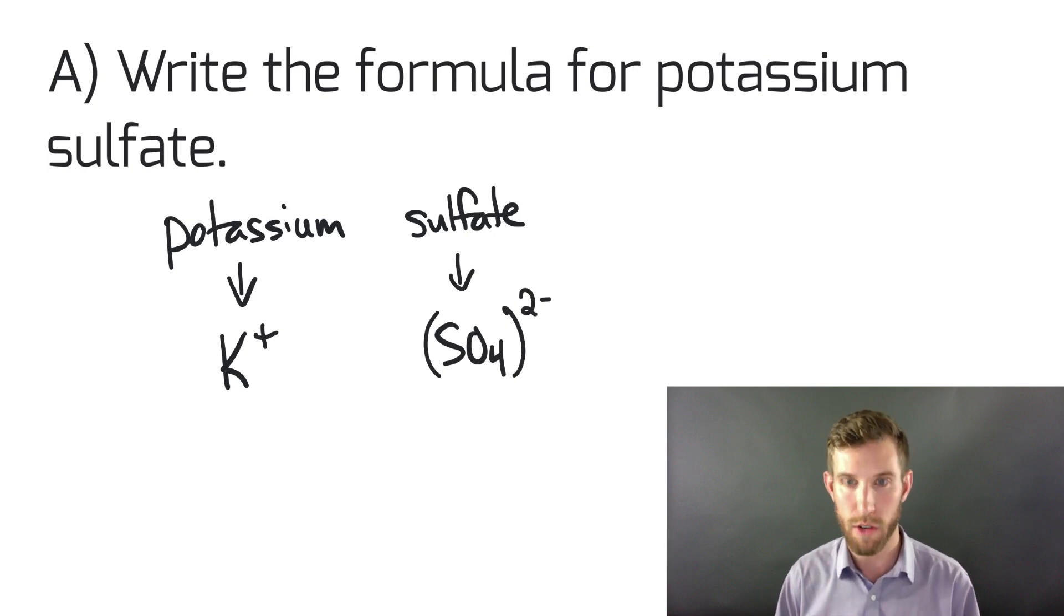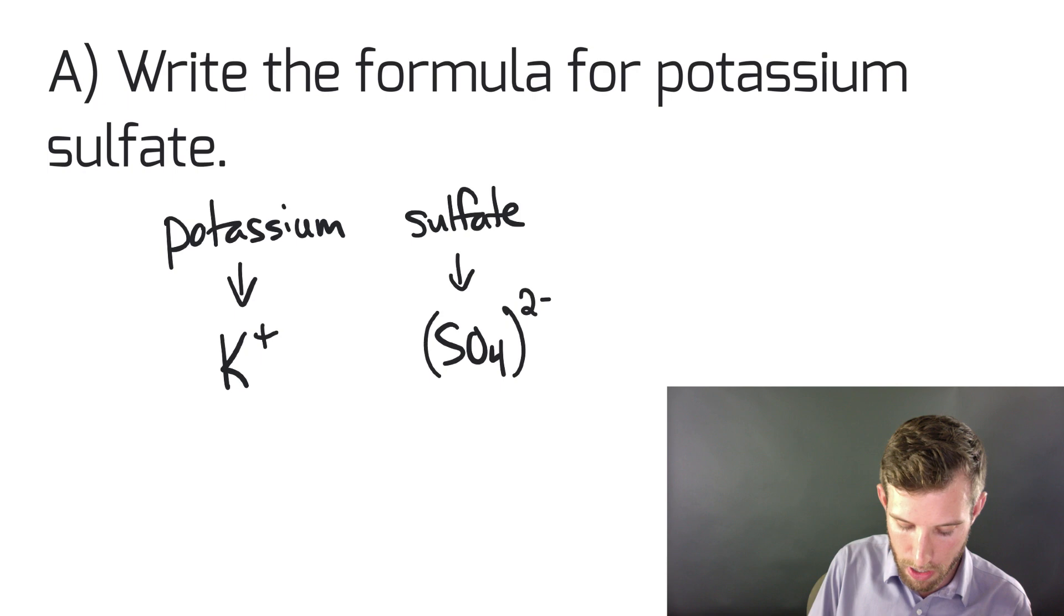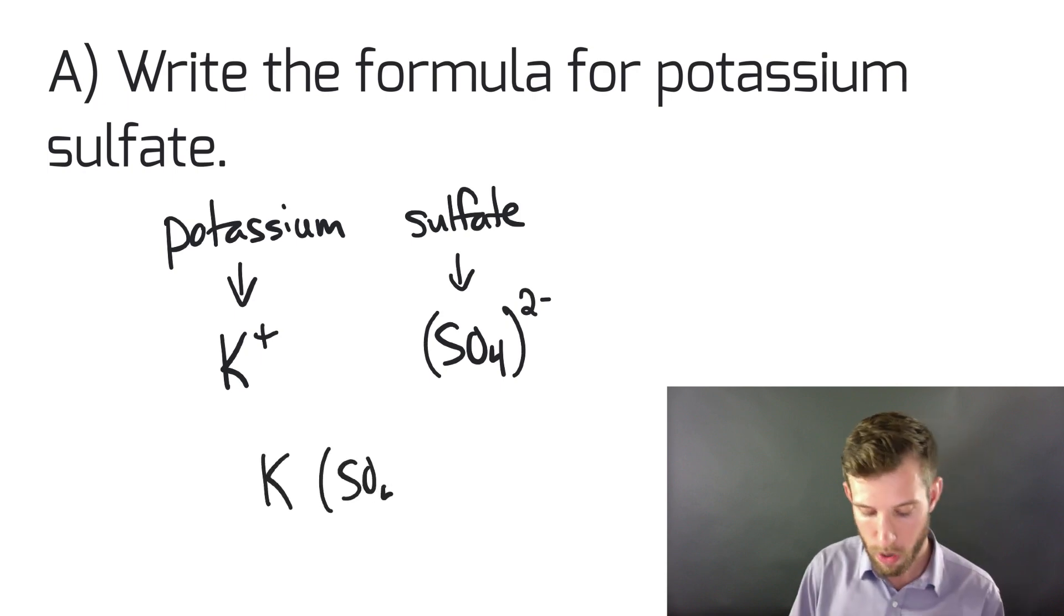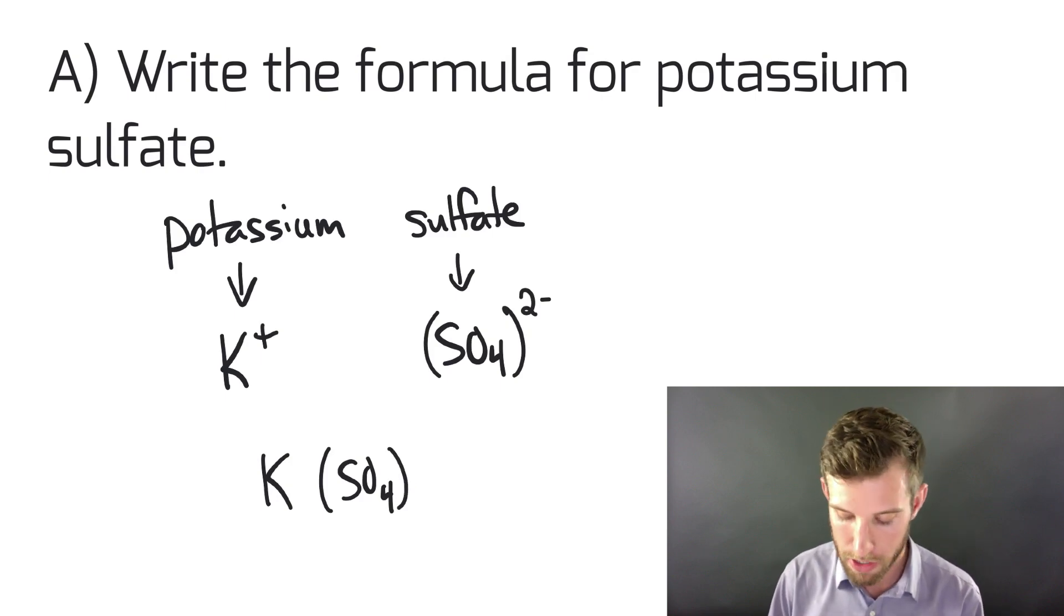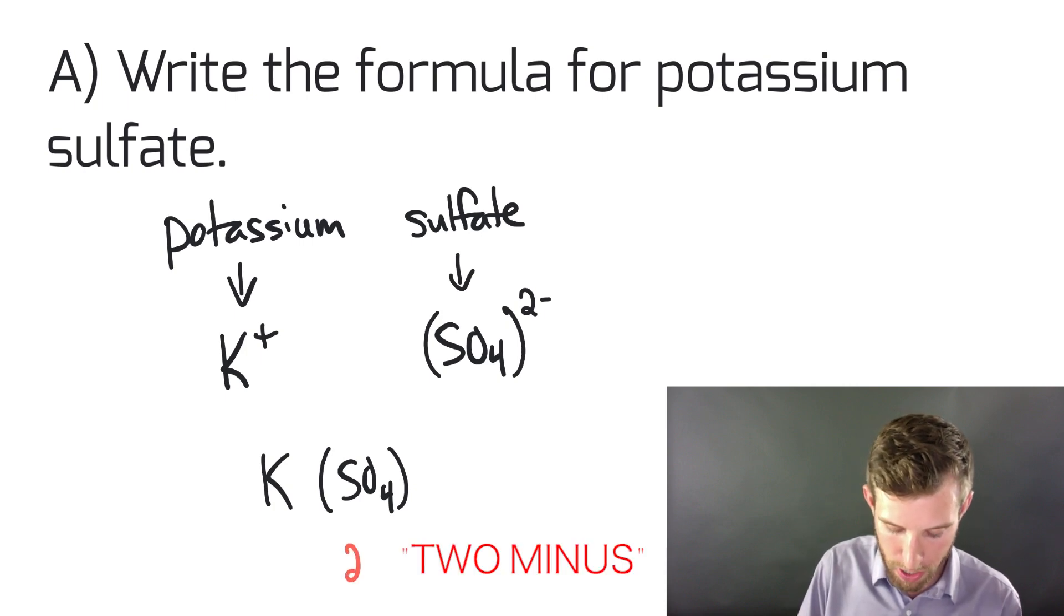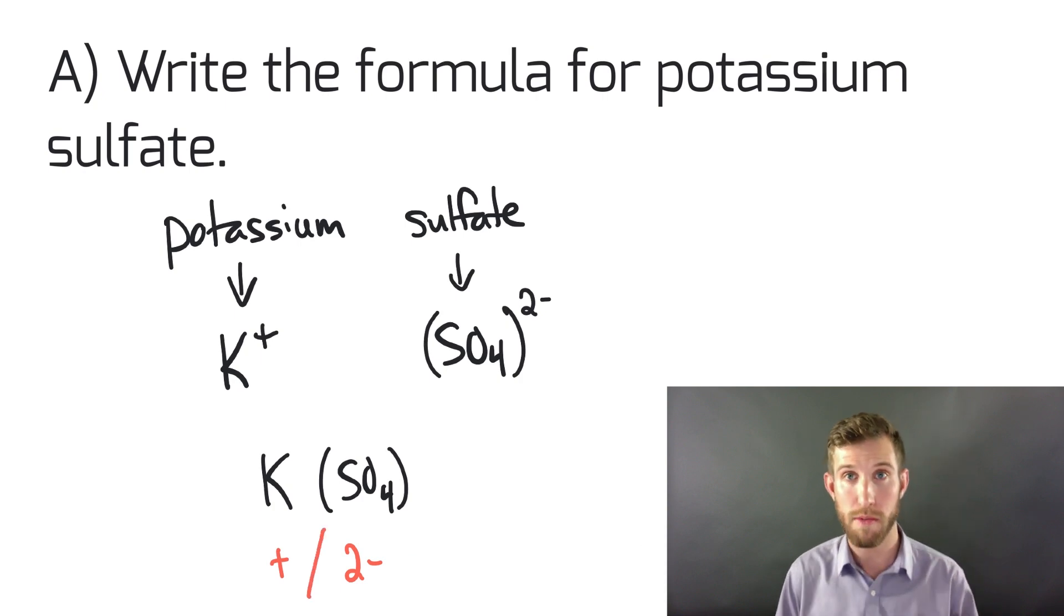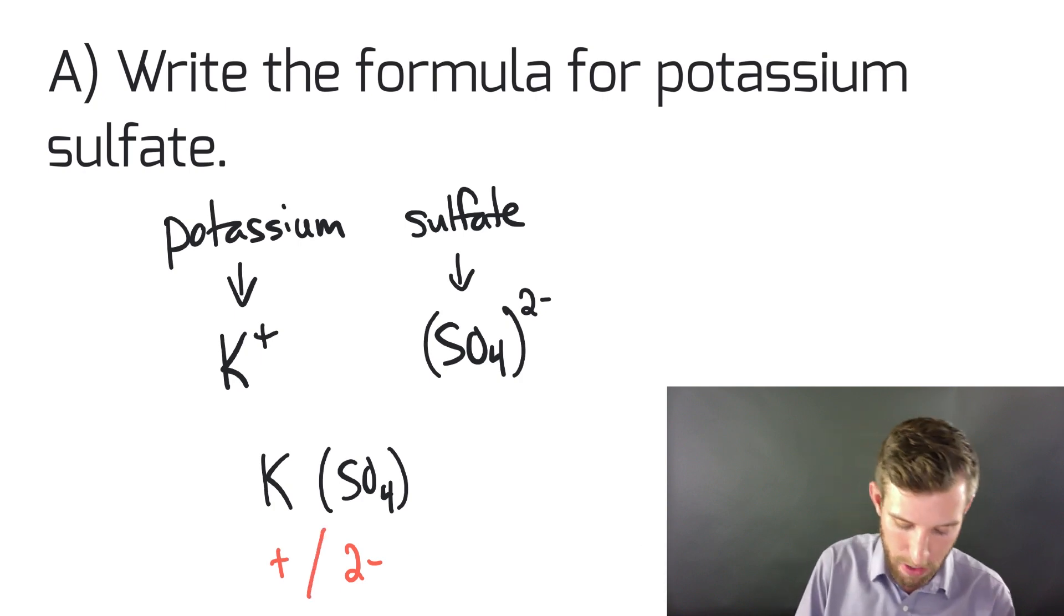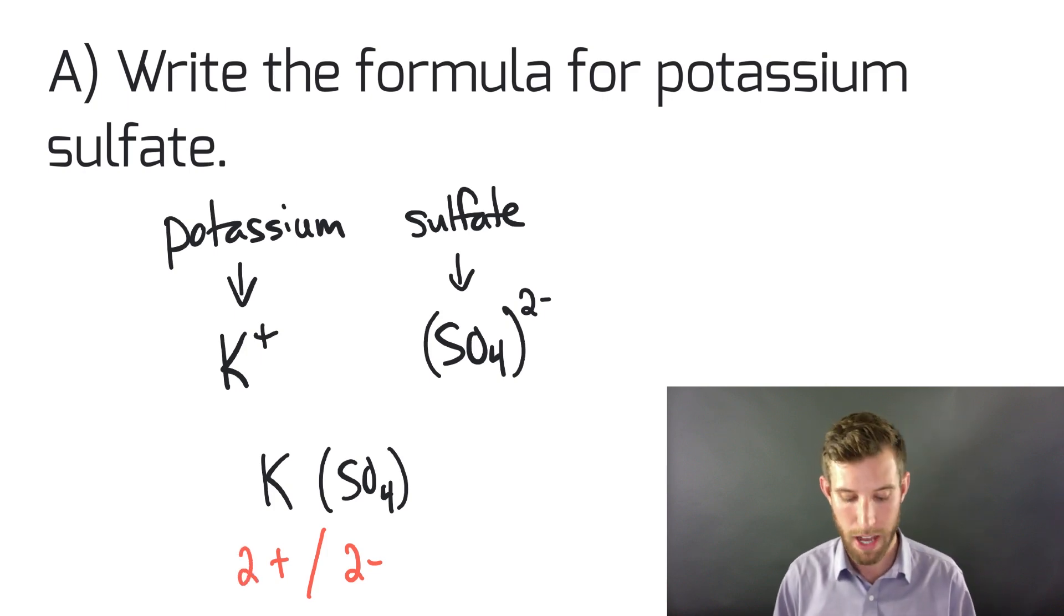For example, if I was to put one potassium with one sulfate, we're looking at a one plus charge and a two minus charge. That's not good for us. We want those to be balanced. We want a two plus charge and a two negative charge, which makes our overall compound neutral. In order to do that, I'm going to have to add in two potassiums, so K2(SO4).